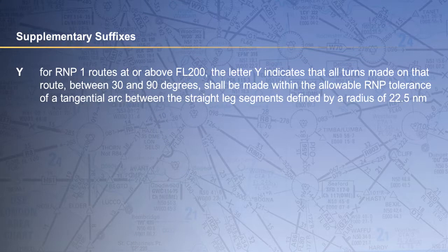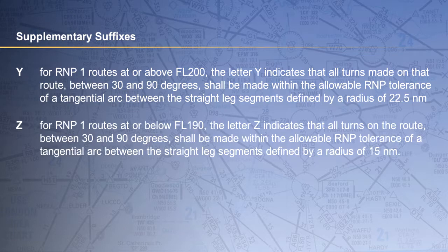Supplementary suffixes are used to indicate the type of service provided or the turn performance required on the route. For RNP1 routes at or above flight level 200, the letter Y indicates that all turns made on that route between 30 and 90 degrees shall be made within the allowable RNP tolerance of a tangential arc defined by a radius of 22.5 nautical miles. For RNP1 routes at or below flight level 190, the letter Z indicates that all turns between 30 and 90 degrees shall be made within the allowable RNP tolerance of a tangential arc defined by a radius of 15 nautical miles.